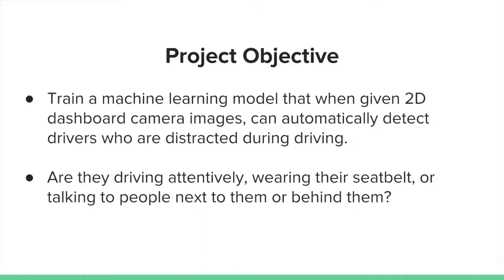Our project's objective is to train a machine learning model which, when given 2D dashboard camera images, can automatically detect drivers who are distracted during driving. Basically, what we want to obtain is, based on the image, whether the driver is driving attentively, wearing their seatbelt, or talking to people next to them or behind them.